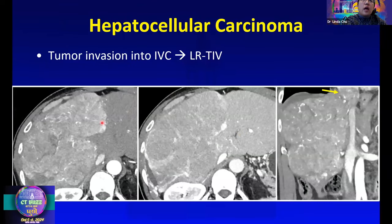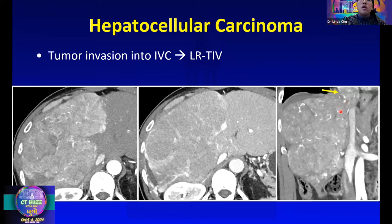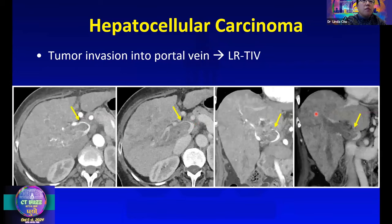Here's an example of the LR-TIV category, with a very heterogeneously enhancing infiltrative-looking mass on arterial phase and washout on venous phase. On coronal images, this mass is directly invading the IVC — that's why it falls in the LR-TIV category. Arterial phase images are helpful in distinguishing tumor thrombus from bland thrombus, because tumor thrombus will enhance on arterial phase. In a second example, the portal vein is expanded with a filling defect that shows enhancement on arterial phase, confirming tumor thrombus rather than bland thrombus.